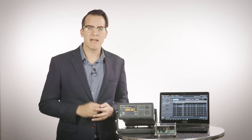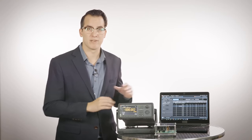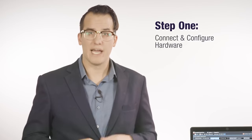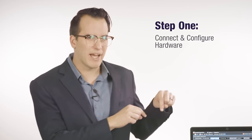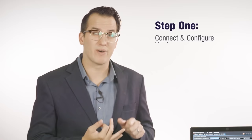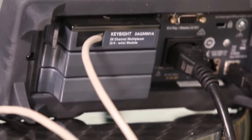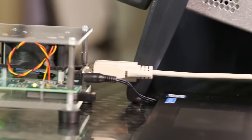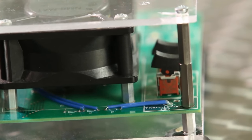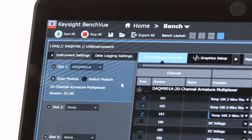So there are three main steps to making a temperature measurement. First, we need to connect and configure our setup. In this case we're going to use the DAQM901A module's channels 101, 102, and 103, which are wired to the temperature cube thermistors T1, T2, and T3. Then we're going to open up BenchVue and make sure we're connected and ready to configure our DAQ.